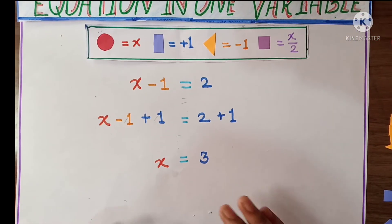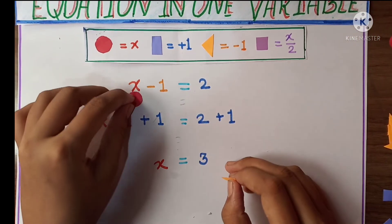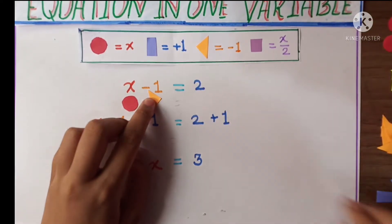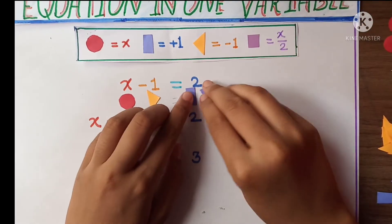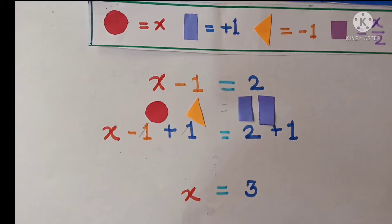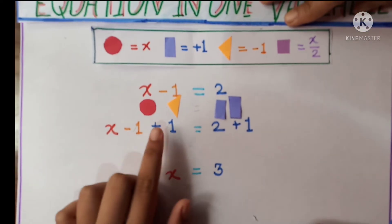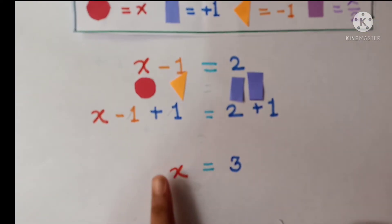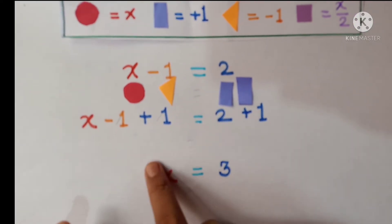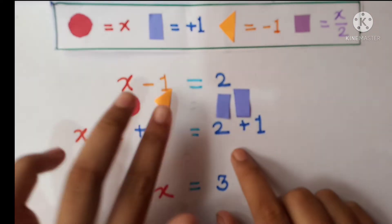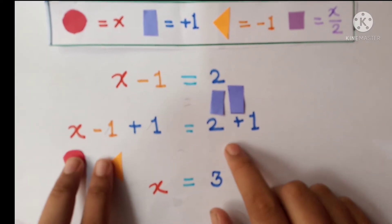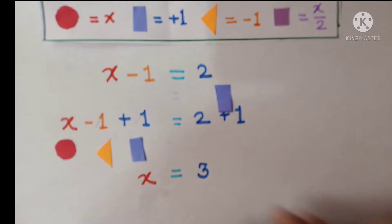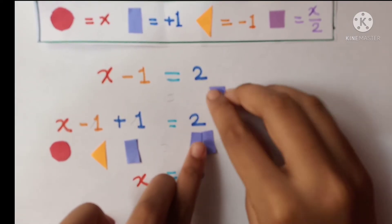So here is our minus equation, our next equation. So here is x, here is minus 1 is equal to 2. So here is minus 1 and the minus 1's opposite will be plus 1. So on both sides LHS and RHS we have to put plus 1. So let's take this as it is and on both sides we will put plus 1, 2 plus 1.